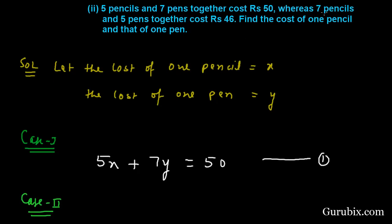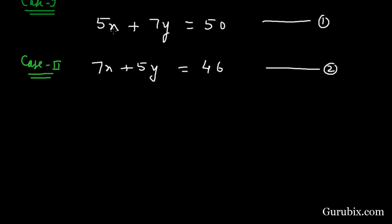So 5x + 7y = 50. This is our equation number 1. In case 2, we are told that 7 pencils and 5 pens cost Rs. 46, which means 7x + 5y = 46. This is our equation number 2. These are the two equations formed from the information given in the question. Now we shall solve this pair of linear equations graphically.